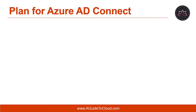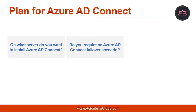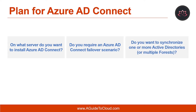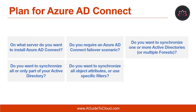Let's look at how to plan for Azure AD Connect. Although Azure AD Connect is easy to implement, if you have a complex Active Directory implementation or special requirements, you need to thoroughly plan the Azure AD Connect tool implementation. To start your planning, you should collect answers to the following questions: On what server do you want to install Azure AD Connect? Do you require an Azure AD Connect failover scenario? Do you want to synchronize one or more Active Directories or multiple forests? Do you want to synchronize all or only part of your Active Directory, or do you want to synchronize all object attributes or use specific filters?